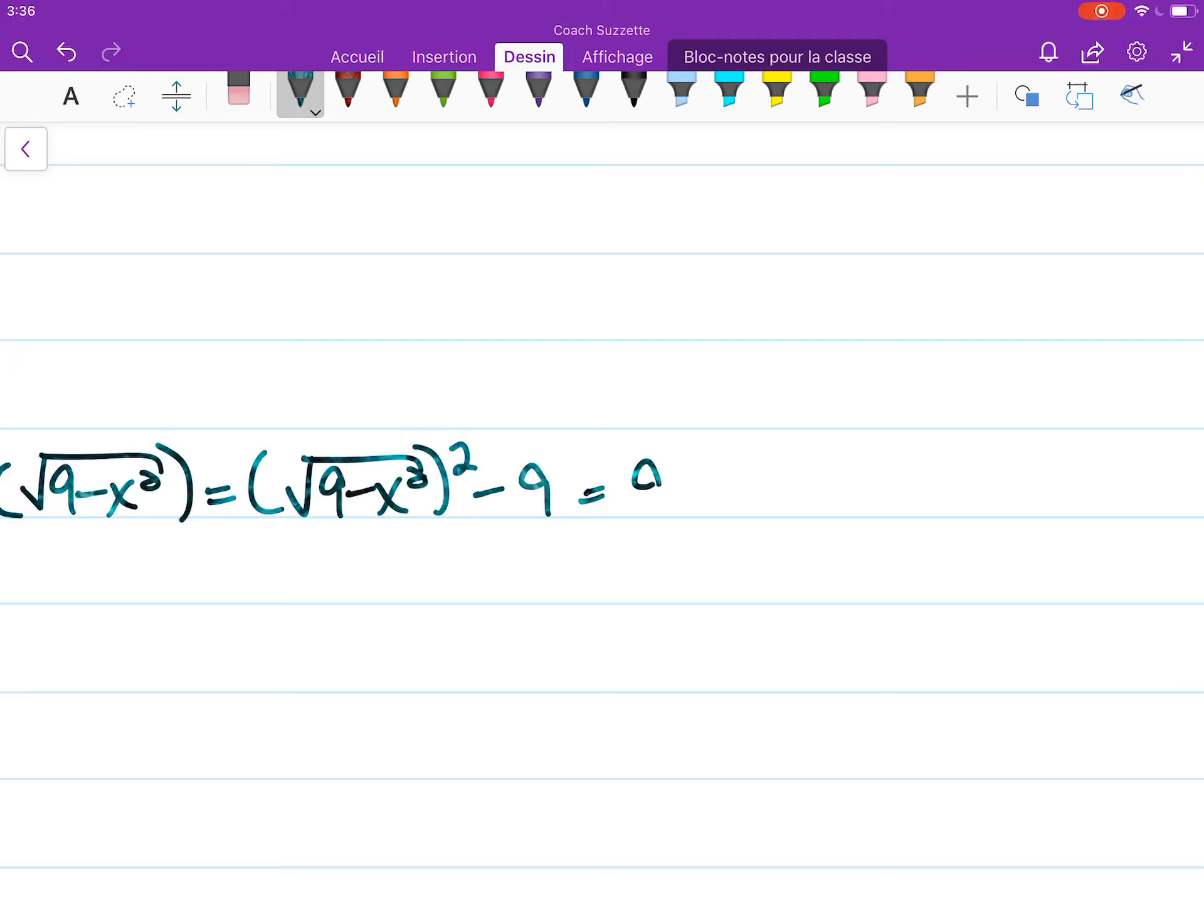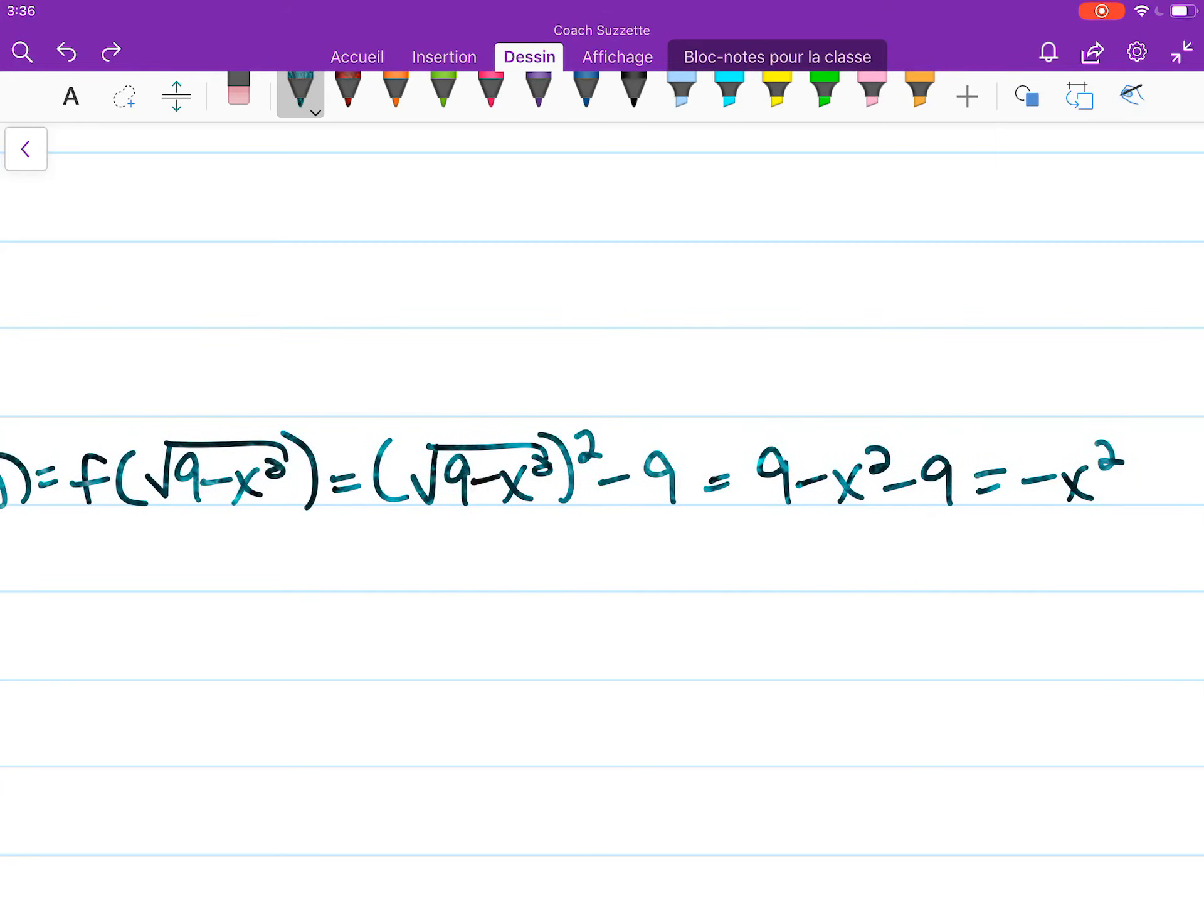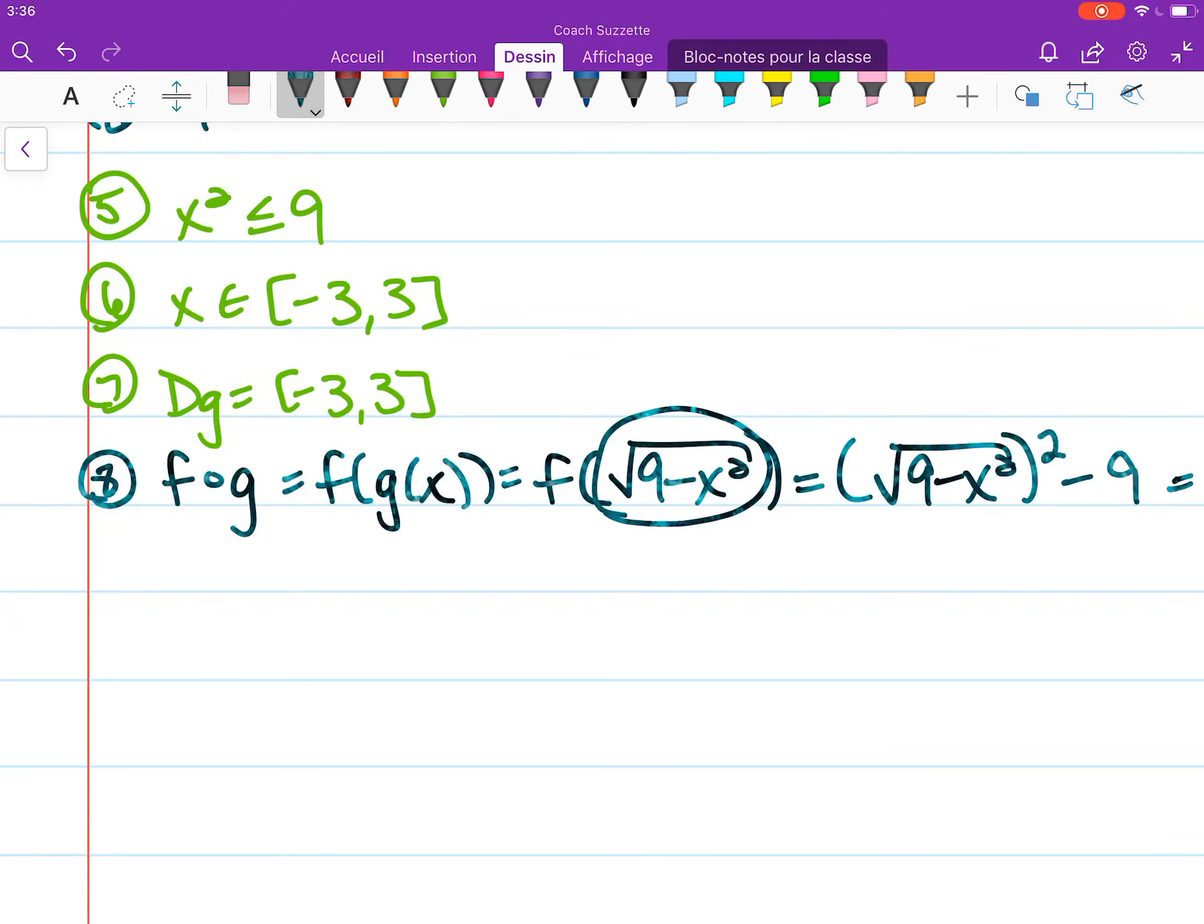Further simplifying: 9 - x² - 9 = -x². Now, let's be careful here because even though this is a polynomial, the domain is not all real numbers. Why not? Because the domain that we substituted was not all real numbers, it was [-3, 3].